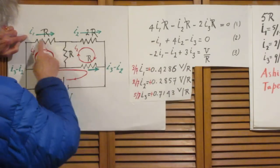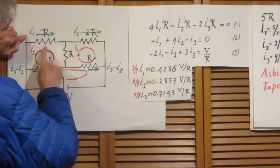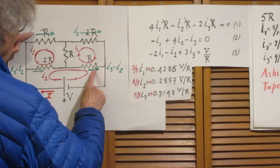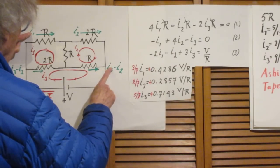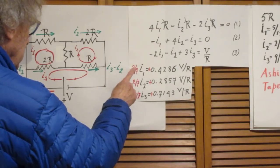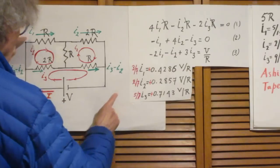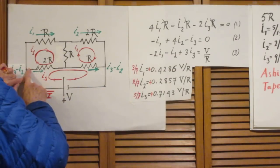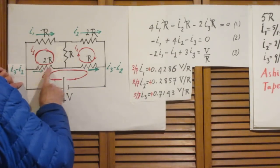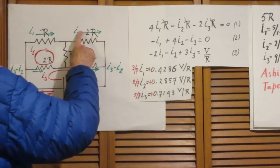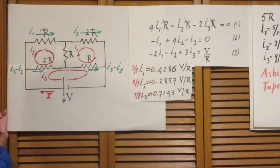Notice that I1 and I3 minus I2. I1 is going through this resistor, I3 minus I2 is going through this resistor. These two numbers are the same. I1 is 3/7, I3 minus I2 is also 3/7. Also notice that the current through this resistor, which is I3 minus I1, is also the same as I2.